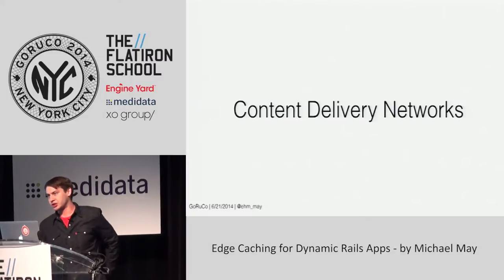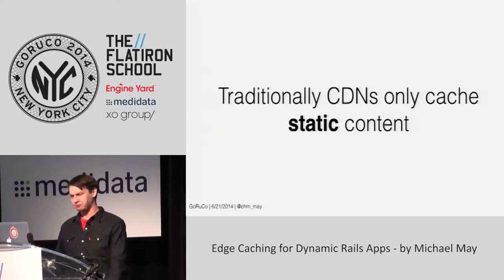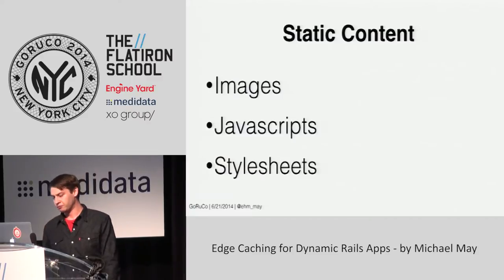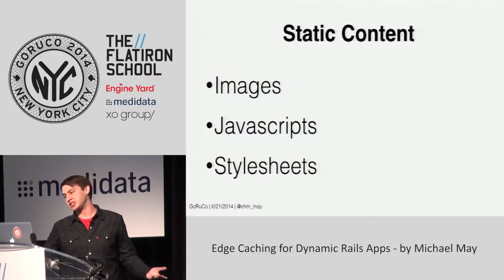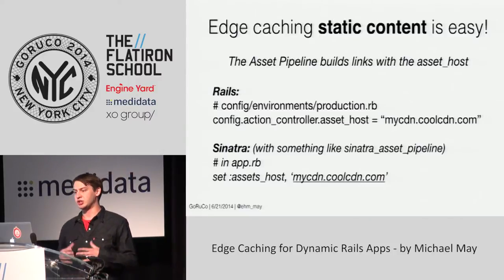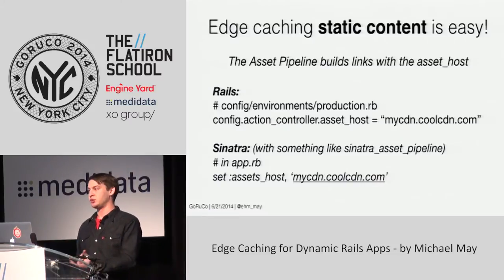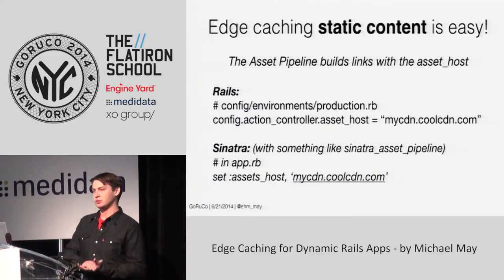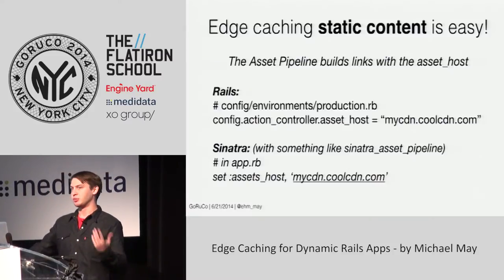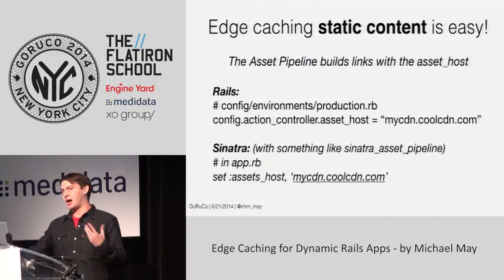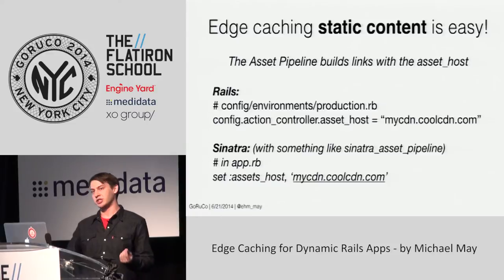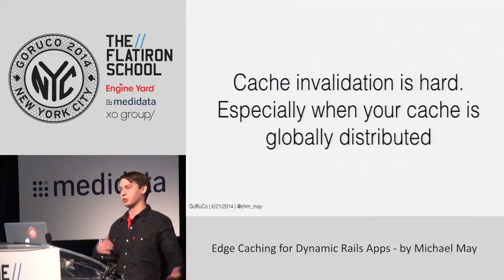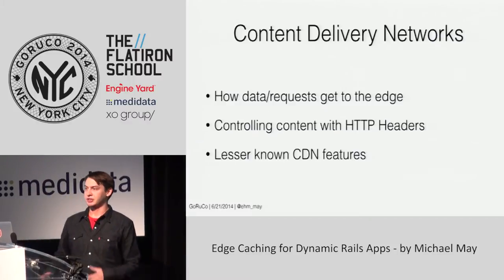Traditionally, when you think of content delivery networks, you think of them as typically only caching static content — things like images, JavaScript, stylesheets, things that don't change very often. The good thing about static content is that it's super easy to edge cache. We have things like the asset pipeline, which is super easy to use: you define an asset host config, set that to your CDN URL, and when you compile your assets, the asset pipeline automatically builds your views with the links out to the CDN. Caching data is an inherently hard problem, and when you distribute your caches all over the world, it just multiplies that complexity.